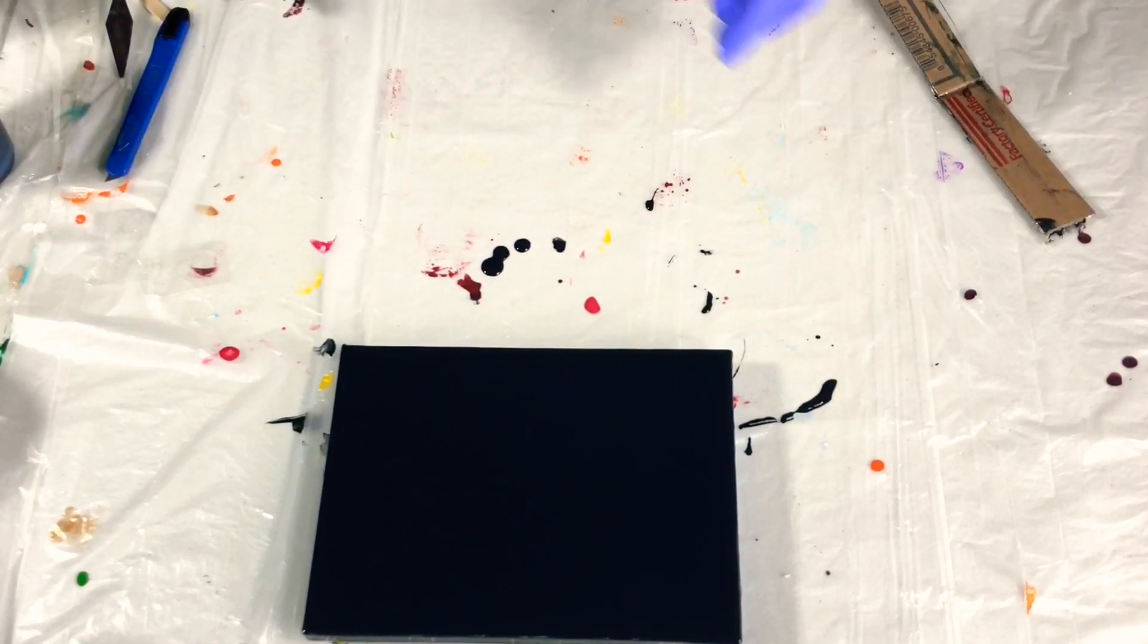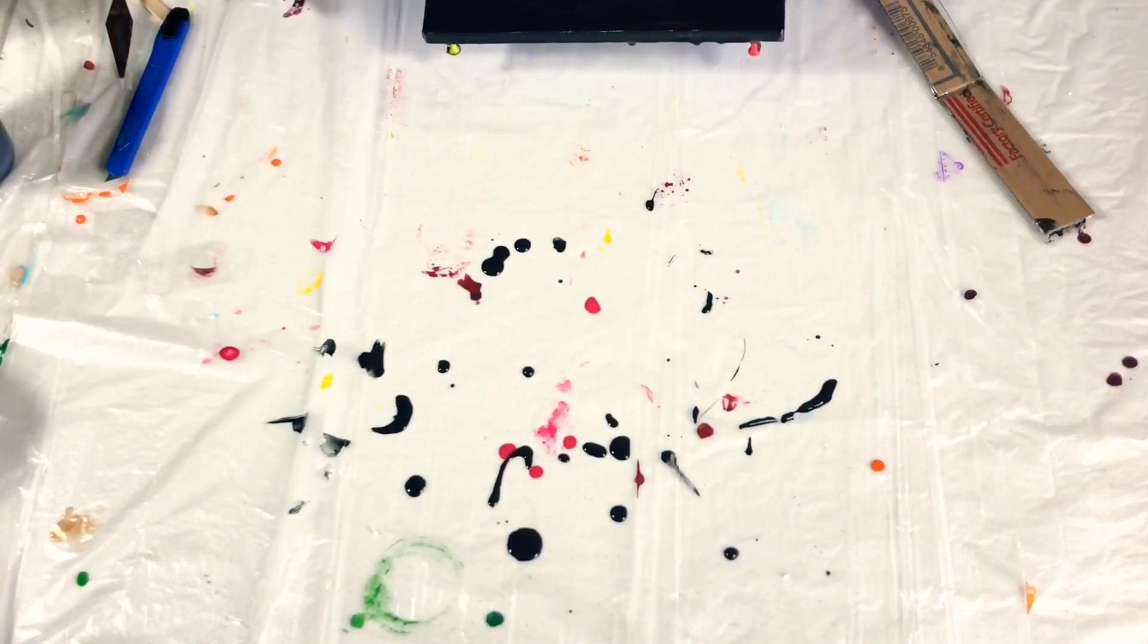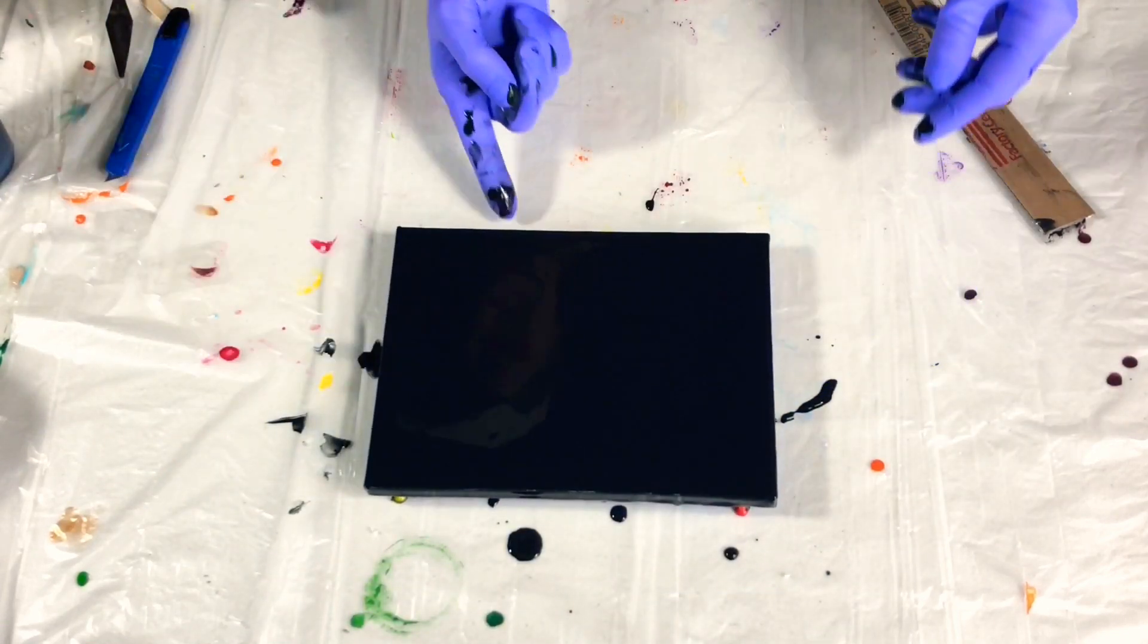But the paint will peel right off of the tape and voila, you have a cardboard catcher.